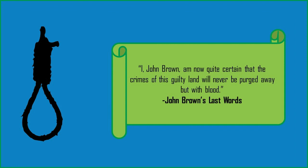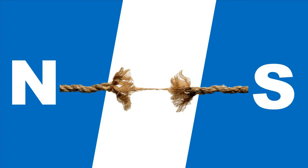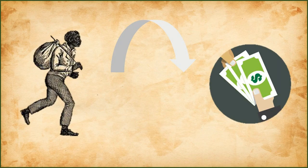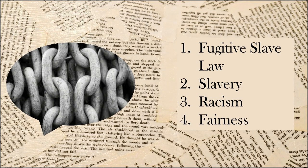Brown's last words were in a note that read: 'I, John Brown, am now quite certain that the crimes of this guilty land will never be purged away but with blood.' Despite the fact that his uprising failed, it created even more tension between North and South and would eventually become an important pivoting point for the upcoming war. The Compromise of 1850, Harriet Beecher Stowe's Uncle Tom's Cabin, the Dred Scott decision, and John Brown's raid on Harper's Ferry all added to the decades-old frenzy over slavery and the future of the African American.